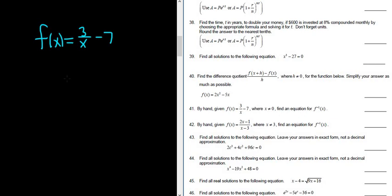So we basically have to find the inverse function. Let's work through it. Step one is you replace your f of x with y. So y is equal to 3 over x minus 7.